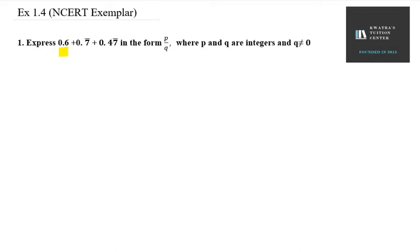This will be my first part, that is 0.6, and then 0.7 bar is the second one, third one is 0.47 bar. First we will convert 0.6, so it can be written as 6/10 if you remove the decimal point, you get 10 at the bottom. So this is 6/10, or you can write it in simplified form, it could be 3/5.